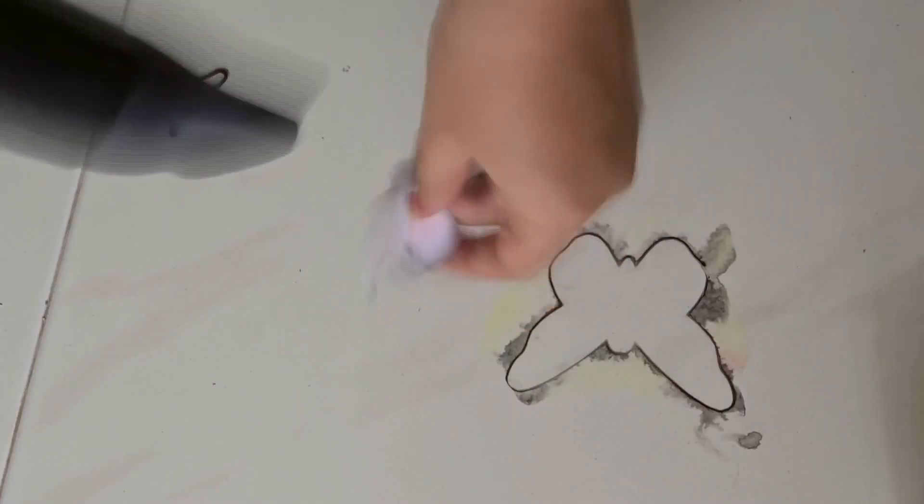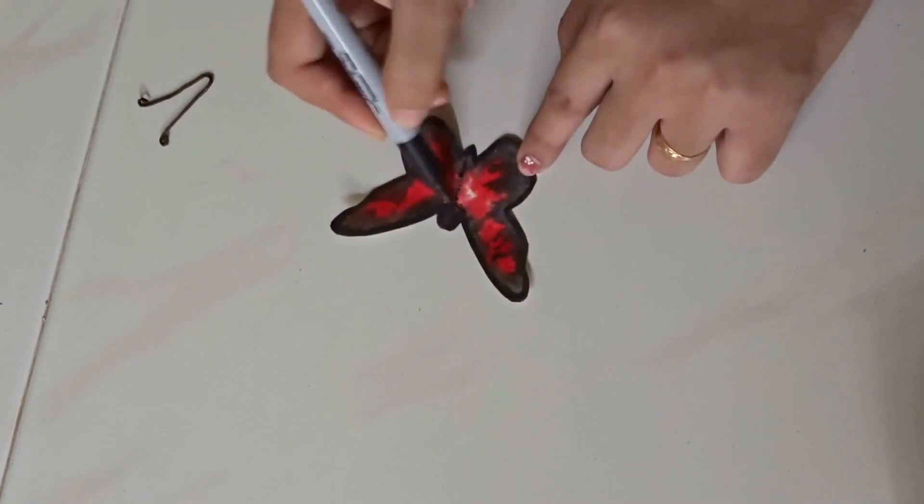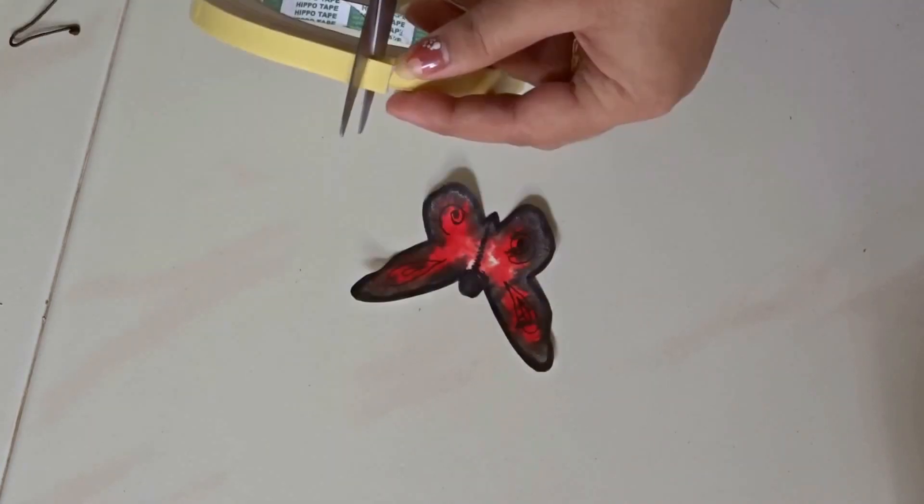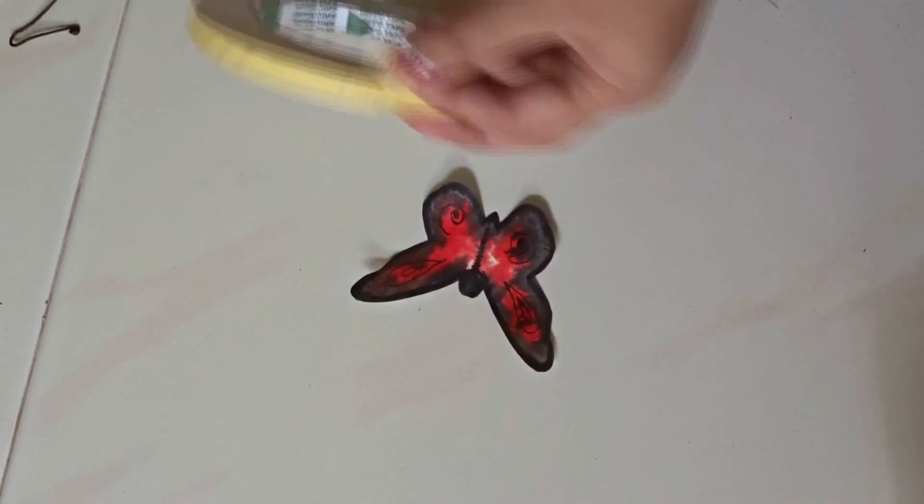After that, use your sharpie or marker to highlight the edges. Then take a small piece of double-sided tape and stick it on the back side of your butterfly.